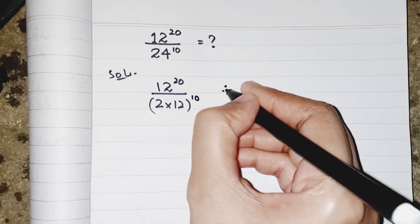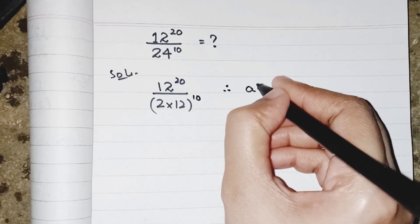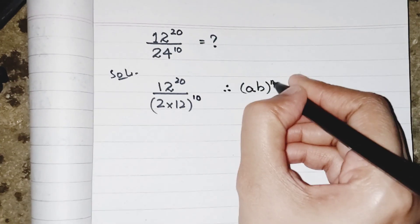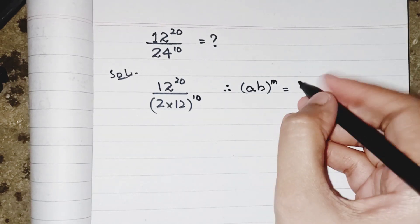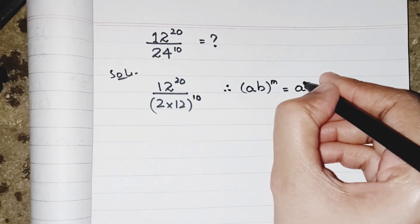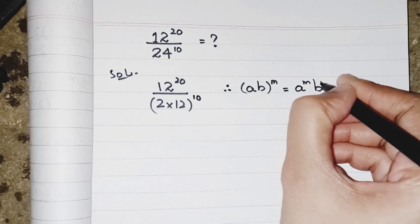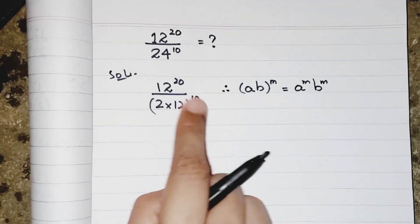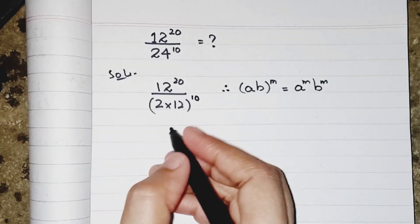Now we know that when we have the same power with two bases which are multiplied, the power will be given to both of them. So this 10 will be distributed to 2 and 12, both of them.